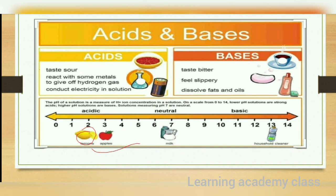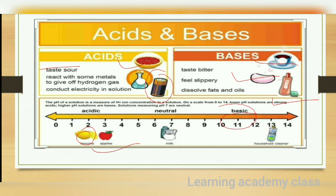Characteristics of acid: sour taste, reacts with some metals to give off hydrogen gas, and conducts electricity in solution. Characteristics of base: bitter taste, feels slippery, dissolves fat and oil — like soap, tea, hand wash, etc. On the pH scale, 0 to 6 is acidic, 8 to 14 is basic. Acid has H+ ions and base has OH- ions.